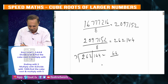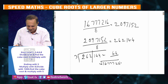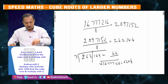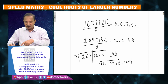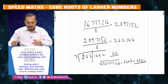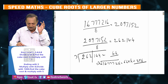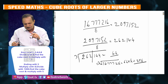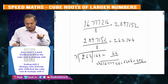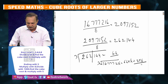So, cube root of 167216 is 64 into 4, so this is the answer. Cube root of 167216 is 64, so this is 256.